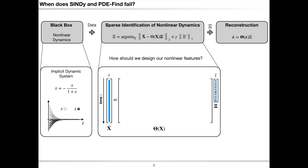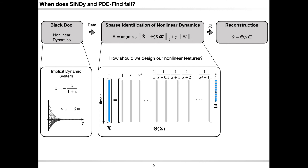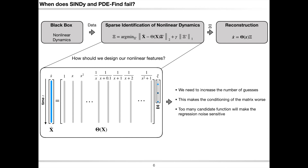When using the original SINDy algorithm, we have to include the exact rational features to identify the correct dynamics. However, if we have no information on the system we are trying to identify, we have to make guesses about what kind of numerator and denominator our nonlinear features should have. This will inevitably increase the number of candidate terms in the library, resulting in a large library, which is sensitive to measurement noise during the regression process.